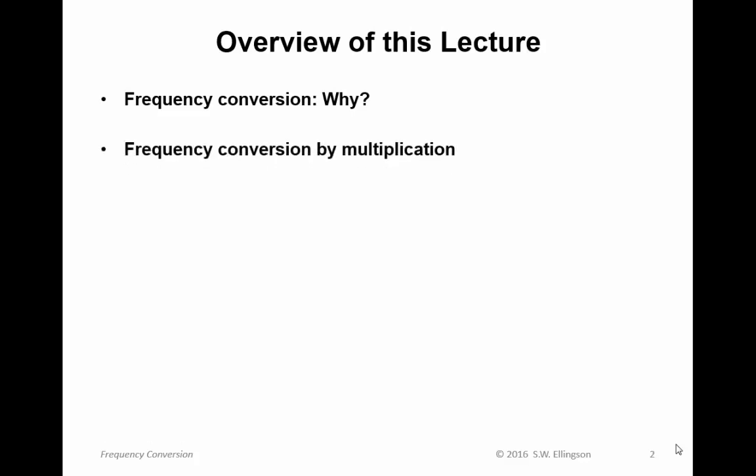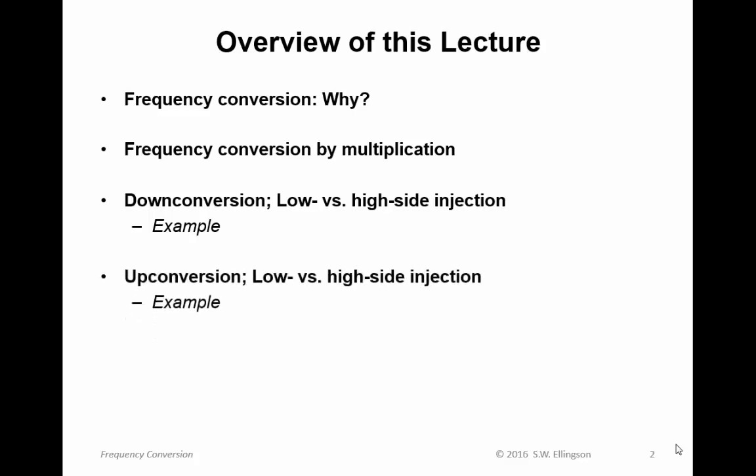We'll talk about frequency conversion using multiplication, which is the primary method. We'll talk about down conversion — the process of reducing frequency — and the two basic methods for doing that: low side and high side injection, with examples. We'll also talk about up conversion, the process of increasing frequency, again with low side and high side injection versions.